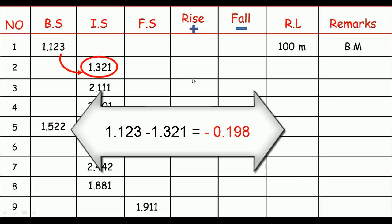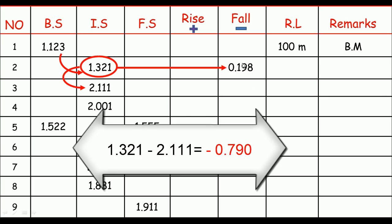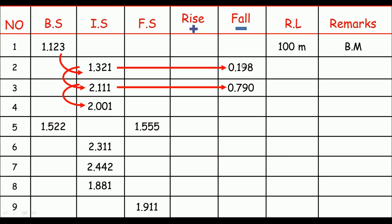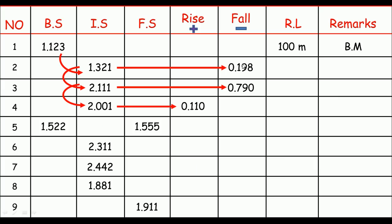For example, 1.123 minus 1.321 — this is of course a fall. I'm not putting the minus sign here because the fall column contains all the values having minus. And then we subtract intermediate sight from intermediate sight: 1.321 minus 2.111 — this is also a fall. Then intermediate sight minus intermediate sight: 2.111 minus 2.001 — this is of course a rise, because the value is positive 0.110.